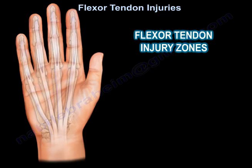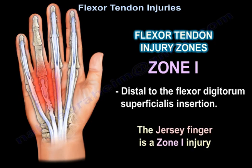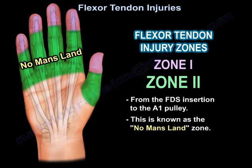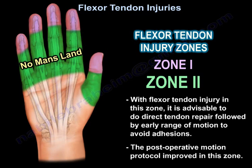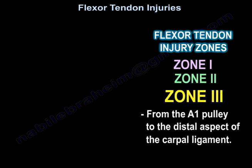Flexor tendon injury zones: Zone 1 is distal to the FDS insertion — like the jersey finger. Zone 2 runs from the FDS insertion to the A1 pulley; this is 'no man's land.' Zone 2 injuries can involve both the FDP and FDS, are associated with adhesions and poor outcomes, and should be followed by early range-of-motion post-repair. Zone 3 runs from the A1 pulley to the distal aspect of the carpal ligament.